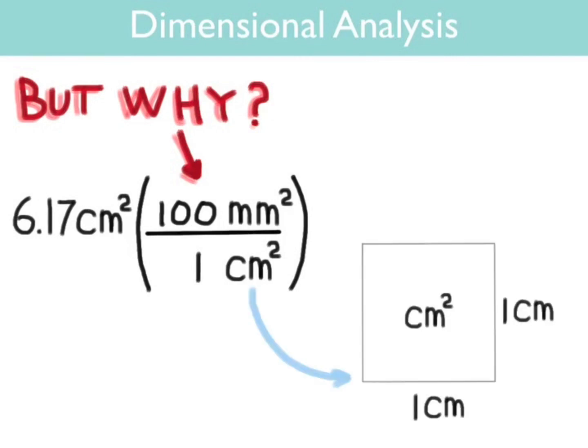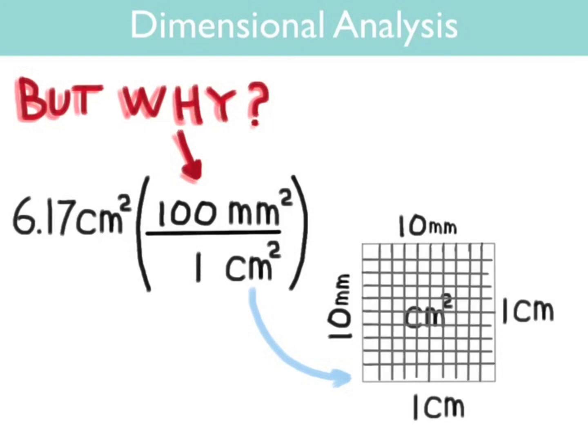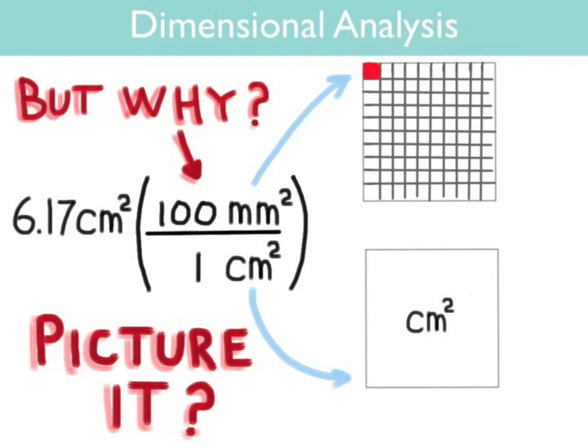If you have 1 centimeter squared, in other words 1 centimeter in the shape of a square, it will measure 1 centimeter by 1 centimeter. This is the same as 10 millimeters by 10 millimeters. So if we divide the centimeters squared into millimeters squared, there will be 100 millimeters squared in 1 centimeter in the shape of a square. Now can you picture it?